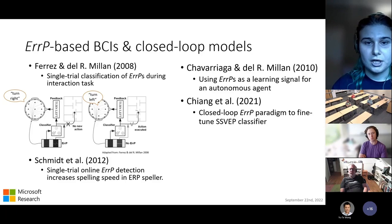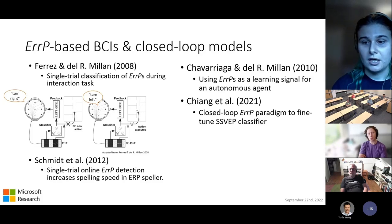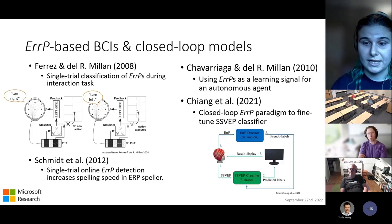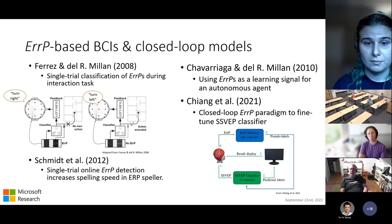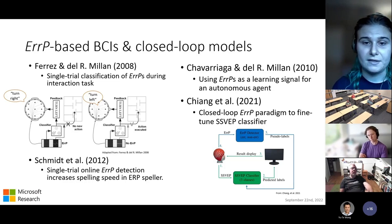Chiang and colleagues in 2021 — a past MSR intern project — included an error-related potential detector within a traditional SSVEP paradigm to improve and fine-tune the SSVEP classifier as the user interacted with it. The traditional SSVEP BCI paradigm is the component in green at the center, and they added this error-detection feedback loop on the outside to provide information to the SSVEP classifier and continue fine-tuning it over time.